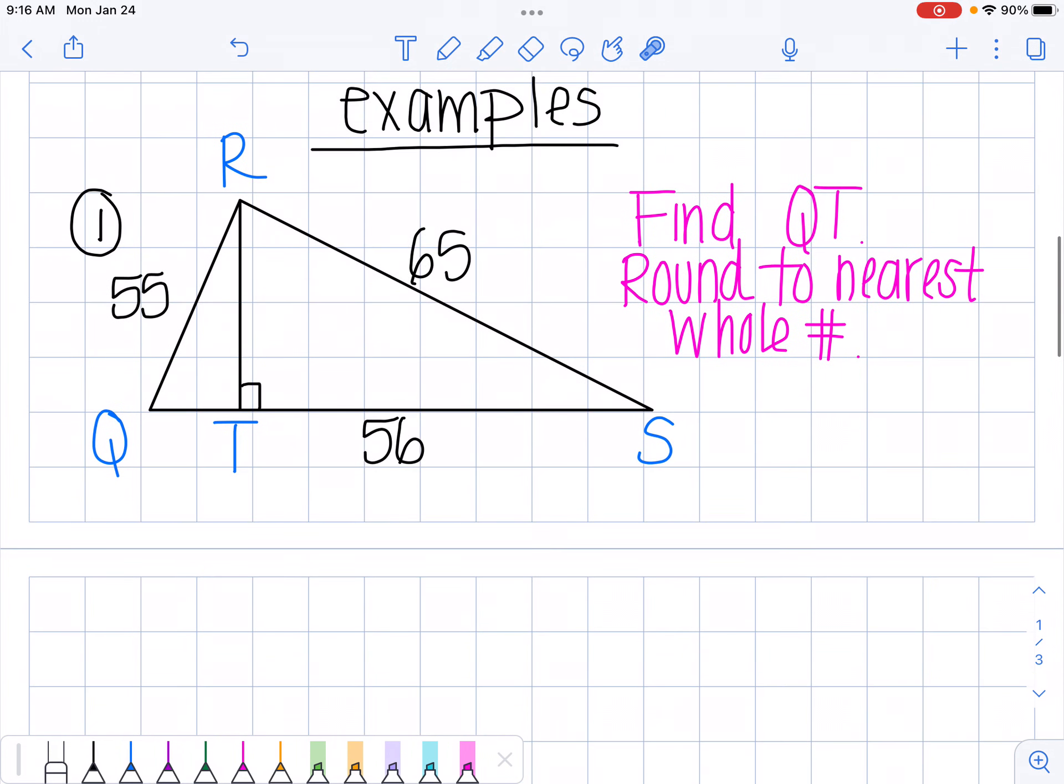So I have two examples for you. First example, we want to find QT, which is this side right here. So first thing I'm going to do is find a right triangle that has two sides that I know, and then I can find my third side. So I see this triangle here has two sides, across from my 90 degrees is 65, so that would be my c value or my hypotenuse. And I'm going to call this side x just to make my life a little easier.